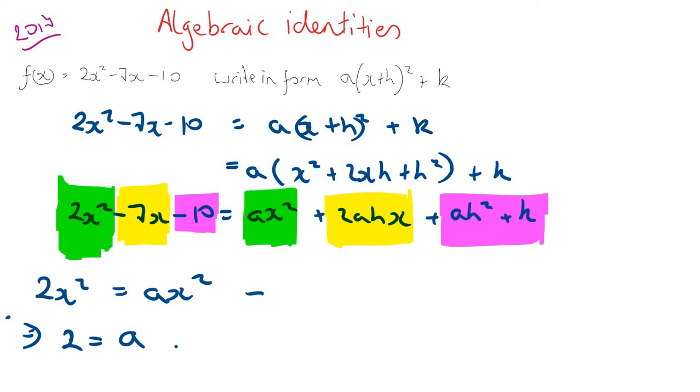Also looking at the yellow one now, minus 7x equals 2ahx, hence minus 7 equals 2 times 2 because a is 2, times h, then h equals minus 7 over 4.